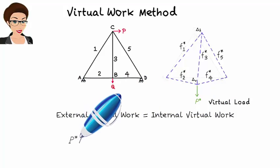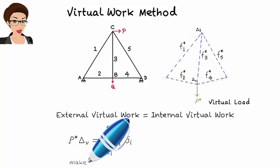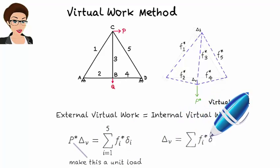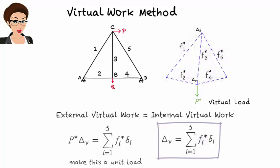Since p-star is imaginary, we can give it any value we wish. To simplify our calculations, let's make it a unit load. So we get: delta-v equals the sum of f-star-i times delta-i. Here, delta-i is the real elongation in member i due to the real loads, and f-star-i is the internal force in the member due to a unit virtual load. Using this equation, we can easily calculate delta-v, the vertical deflection at b due to the real loads. In fact, using this method, we can calculate displacement at any truss joint.